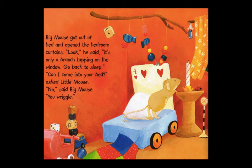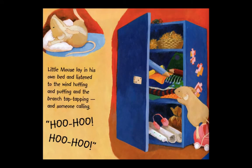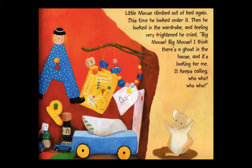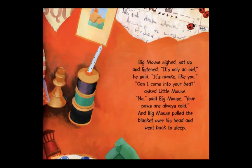'Can I come into your bed?' asked Little Mouse. 'No,' said Big Mouse. 'You wriggle.' Little Mouse lay in his own bed and listened to the wind huffing and puffing, and the branch tap-tapping, and someone calling: 'Hoo-hoo, hoo-hoo.' Little Mouse climbed out of bed again, looked under it, then looked in the wardrobe, and feeling very frightened, he cried: 'Big Mouse, Big Mouse, I think there's a ghost in the house that is looking for me. It keeps calling hoo-hoo, hoo-hoo.' Big Mouse sighed, sat up, and listened. 'It's only an owl,' he said. 'It's awake like you.' 'Can I come into your bed?' asked Little Mouse. 'No,' said Big Mouse. 'Your paws are always cold.'